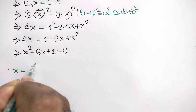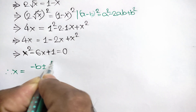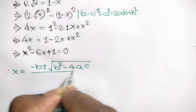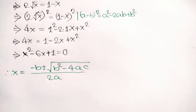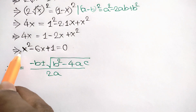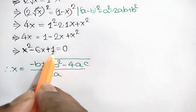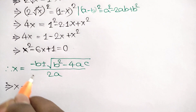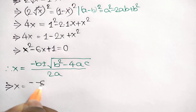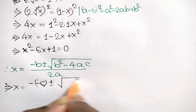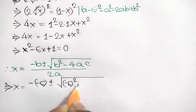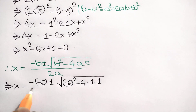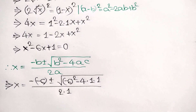x is equal to minus b plus or minus square root of b squared minus 4ac, over 2a. Here a is equal to 1, b is equal to negative 6, and c is equal to 1. So x is equal to minus of negative 6, plus or minus square root of negative 6 squared minus 4 times 1 times 1, over 2 times 1.